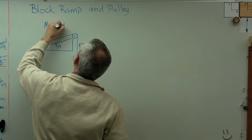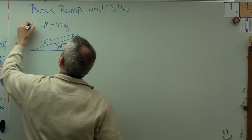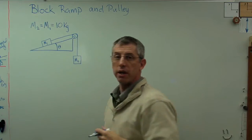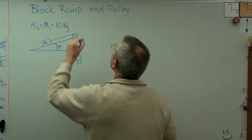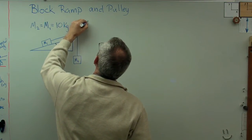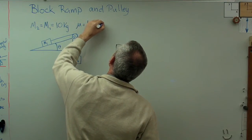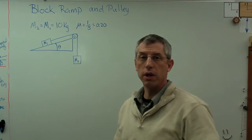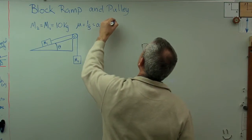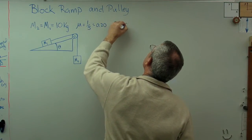Let's make some of those numbers here. The mass of the first block is 10 kilograms and to keep things simple let's make the second mass also 10 kilograms. The coefficient of friction is 1 over 5, and that's 0.20, and finally theta will be 30 degrees.